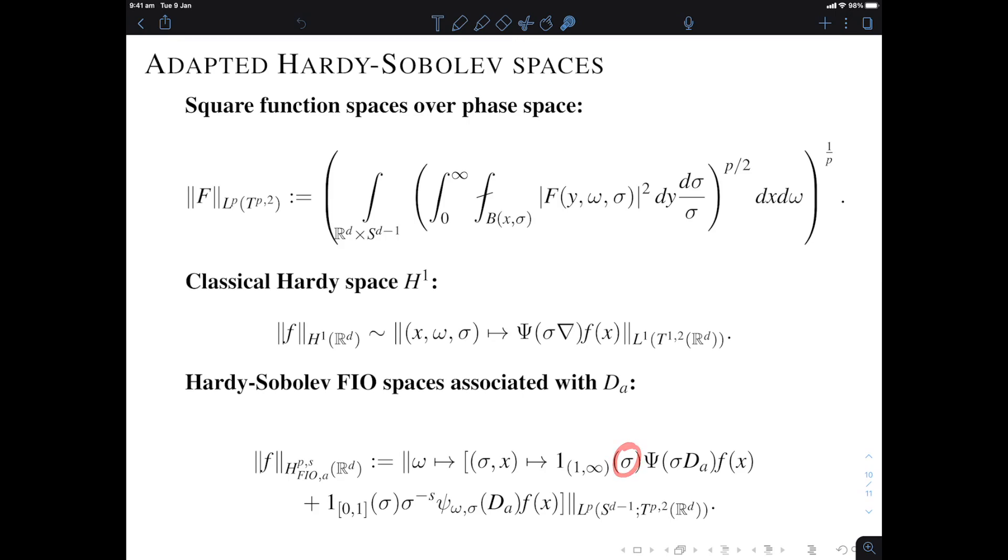secondly to get Hardy-Sobolev FIO spaces as opposed to non-FIO spaces we follow the wave packet transform philosophy so when sigma is large that is to say when we deal with low values of the radial part of the momentum then we just use a Littlewood-Paley type decomposition but when sigma is close to zero we refine that in the wave packet transform way so using wave packet transforms here and this is now dependent on omega and we're going to average over all those omega and then that gives you H^p FIO_A if you want and if you want H^{p,s} FIO_A so you want a regularity parameter s in Hardy-Sobolev spaces as opposed to just Hardy spaces all you have to do is add some weights to this part that correspond to the interesting values of the scale variable and that gives you the appropriate scale of spaces